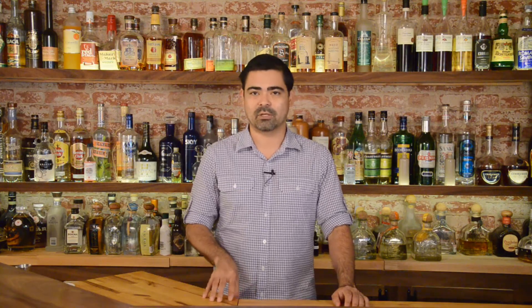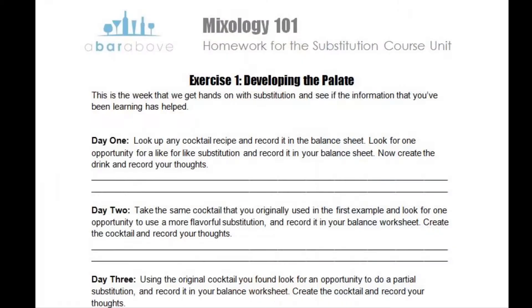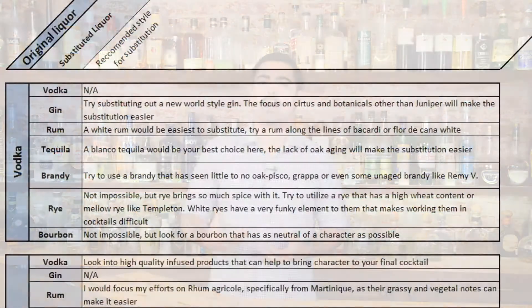In each module we provide you with a lot of detailed information on the subject matter, some homework, and a quick reference guide. The homework is really meant to bridge that gap between learning about something and doing something, giving you personal hands-on experience with all these ingredients to taste along the way and develop your palate. The quick reference guide is something you can print out and put in your back pocket as a bartender, or in your liquor cabinet as an enthusiast, and refer to it if you have questions at any point.